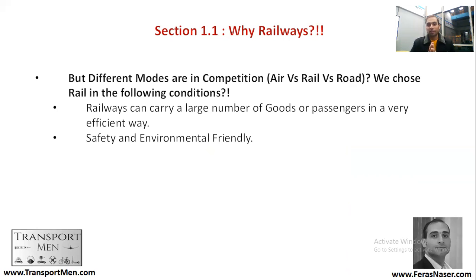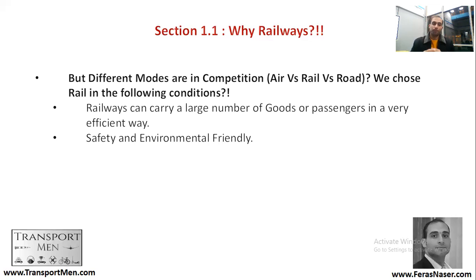When thinking about railways, we should also consider competing modes. Air and rail compete with each other — for example, over a distance of 600 kilometers, should we have frequent air travel or high-speed rail? Within the city, urban rail competes with road: should we have a frequent bus service or a proper metro service? People choose railways when there is a large number of goods or passengers to transport efficiently, and also for safety and environmental reasons — these are the main pillars that drive the choice of railways over other transport modes.